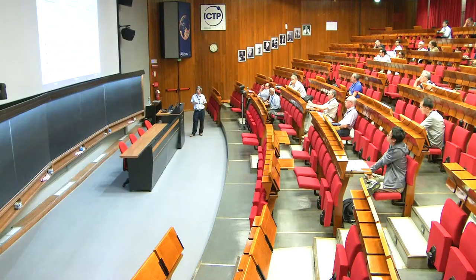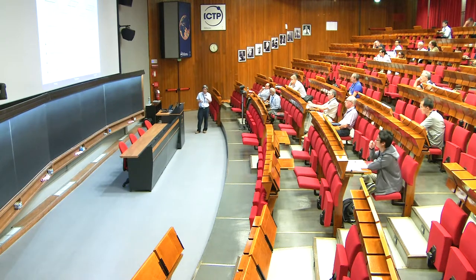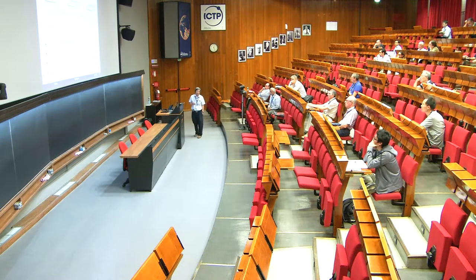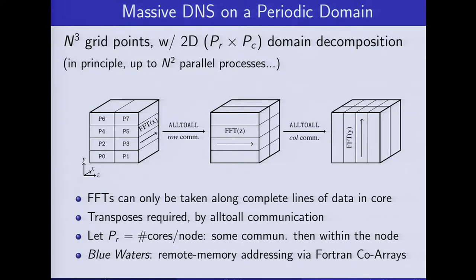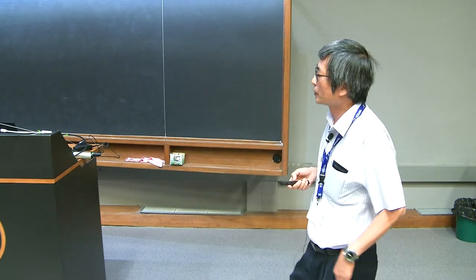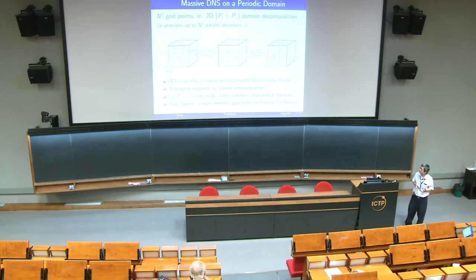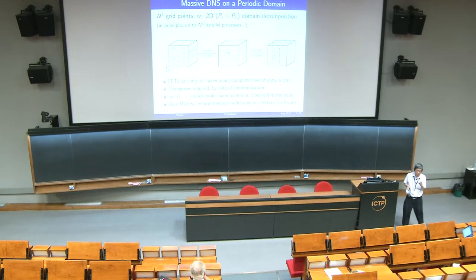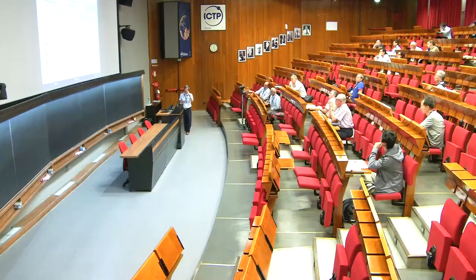There are ways to make this work more efficiently. We can choose one of the dimensions using a so-called two-dimensional process grid, where R and C represent rows and columns. If we choose the number of rows to be the same as the number of nodes — and for Blue Waters the number of cores is 32 per node — then communication between cores on the same node is like talking to the person sitting on the same row, which is quicker. Blue Waters also has remote memory addressing capability. We also have a so-called 2D decomposition to reduce transpose overhead.